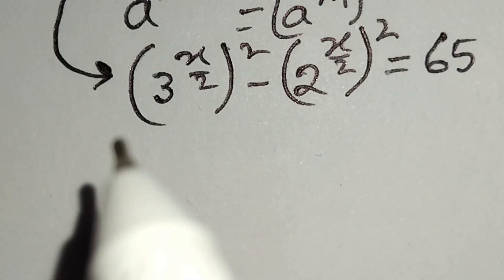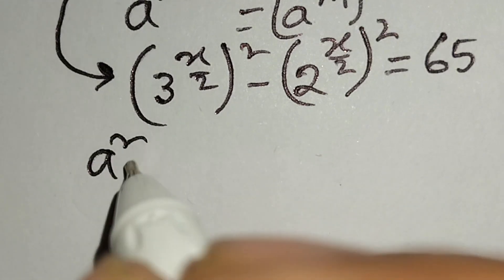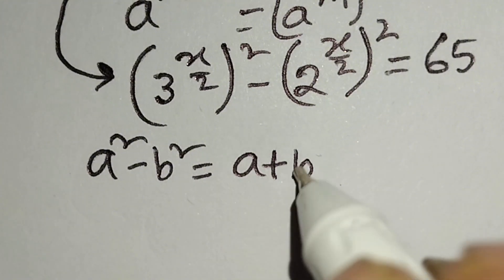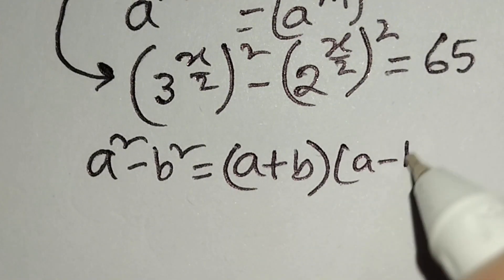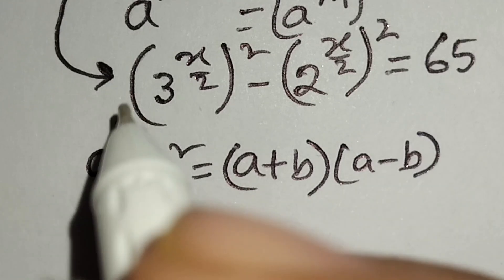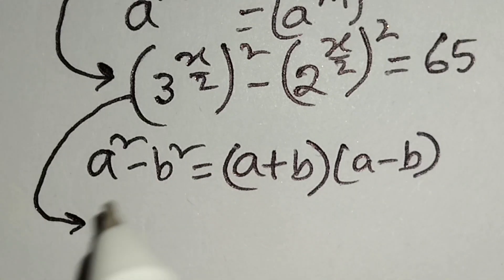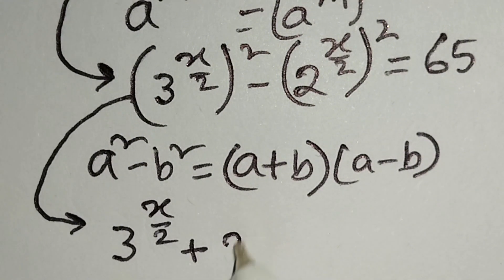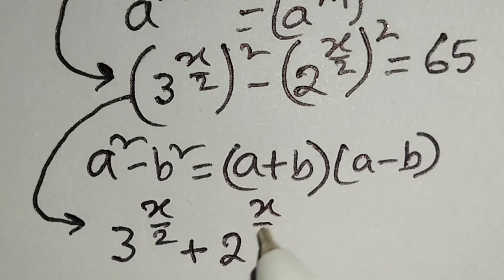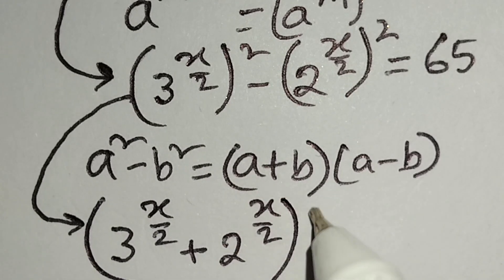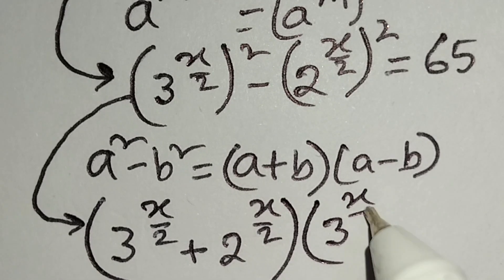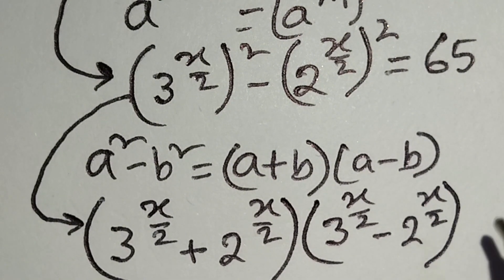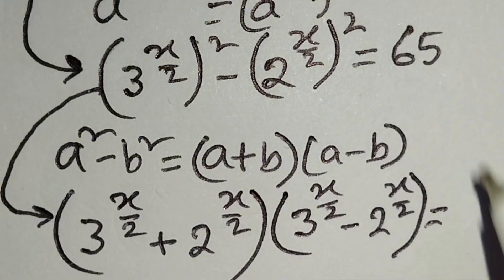We know another math identity: a squared minus b squared is equal to (a + b) times (a − b). According to this identity, we can write this line as: 3 to the power (x/2) plus 2 to the power (x/2), times 3 to the power (x/2) minus 2 to the power (x/2), is equal to 65.